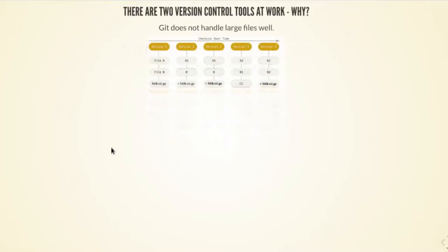The problem happens whenever you start to include files that are either not text files — like binary files, for example brain images, EEG data, whatever kind of files you're acquiring in your research — or when these files are really large. It's worse when they're both binary and large. If you were to include a five gigabyte brain image into your revision history, the first snapshot where this file is included is already five gigabytes large.